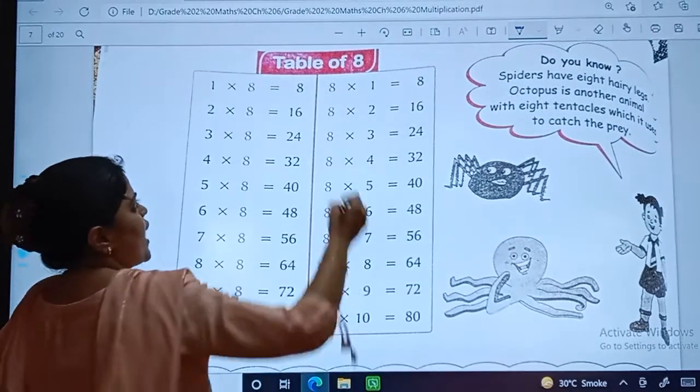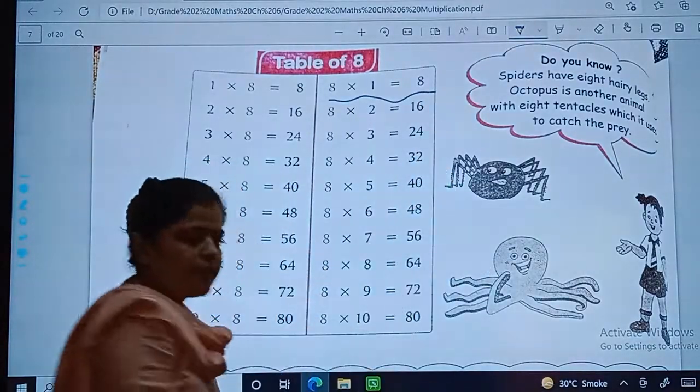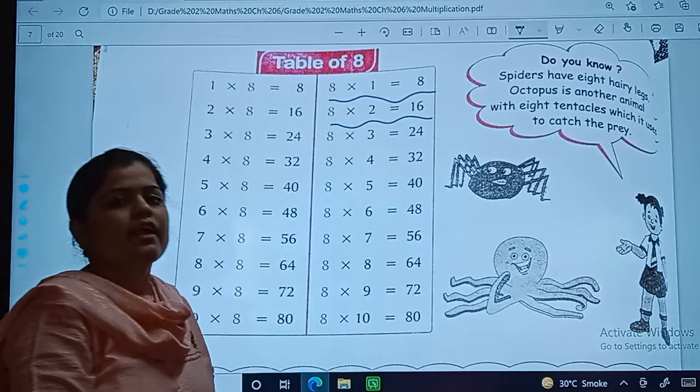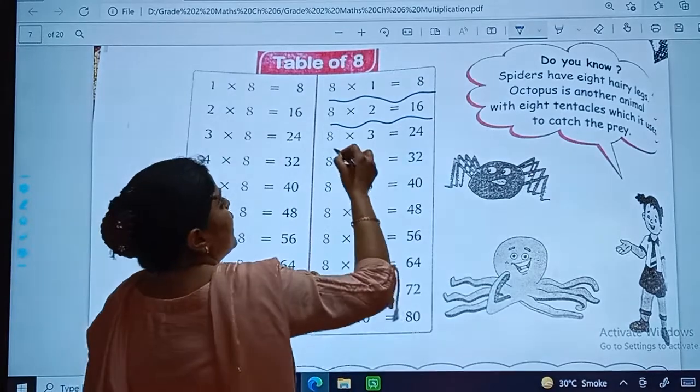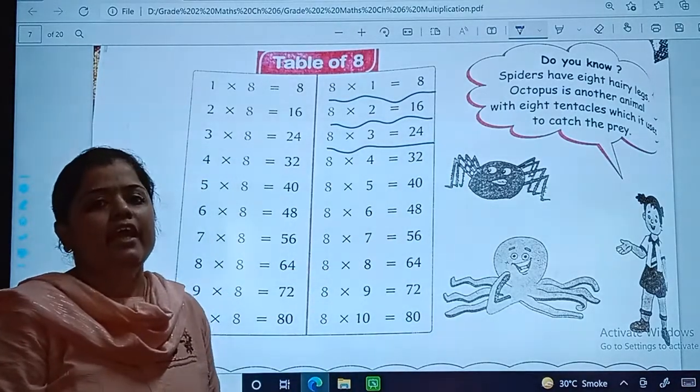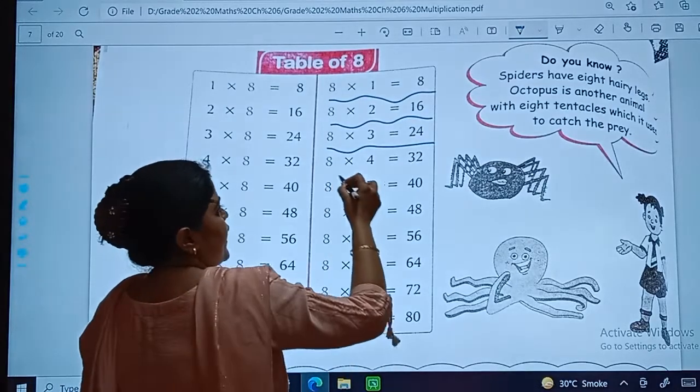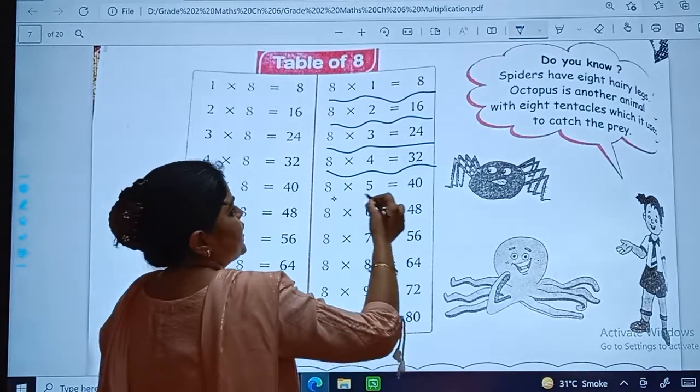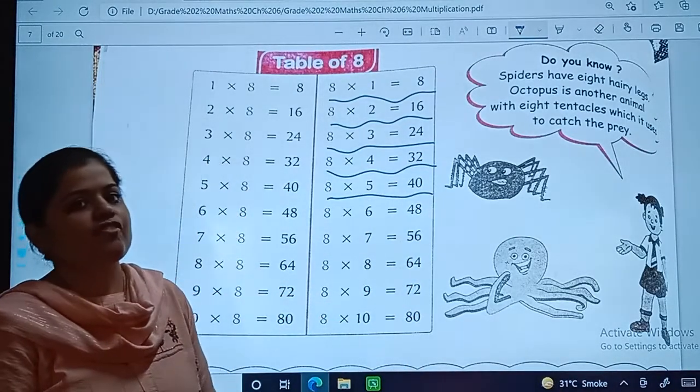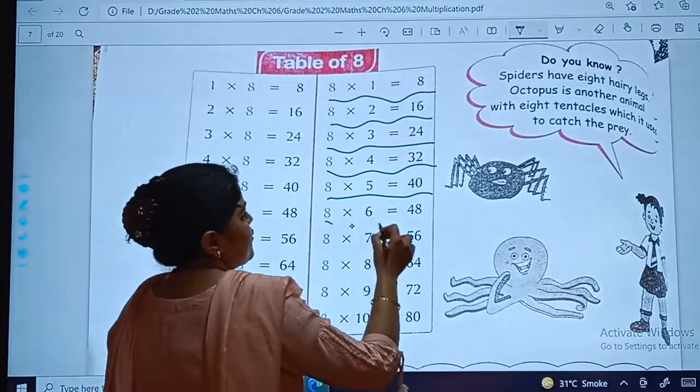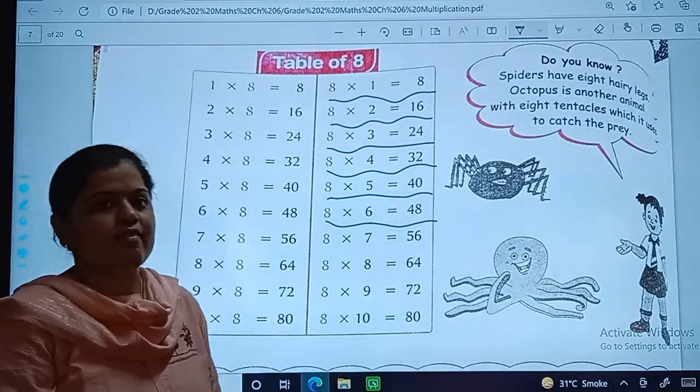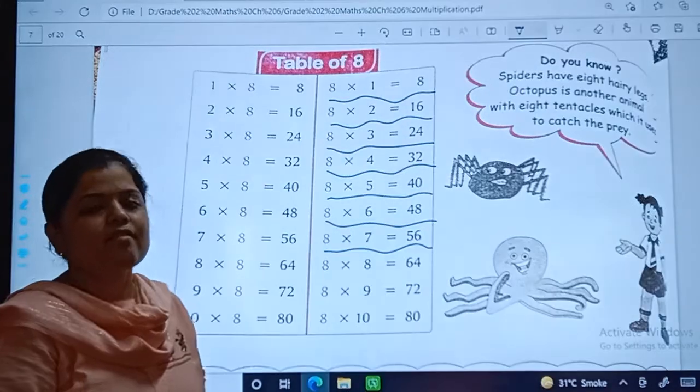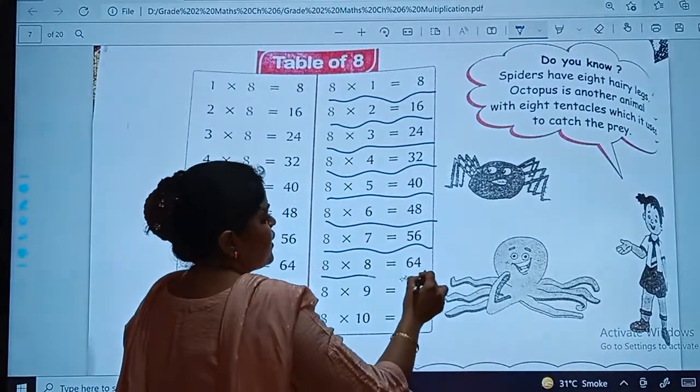Ok, come on, start. 8 ones are 8. 8 twos are 16. 8 threes are 24. 8 fours are 32. 8 fives are 40. 8 sixes are 48. 8 sevens are 56.